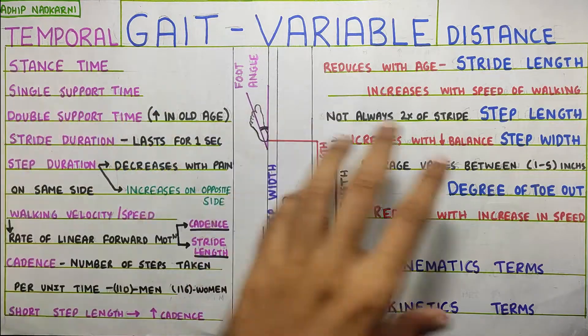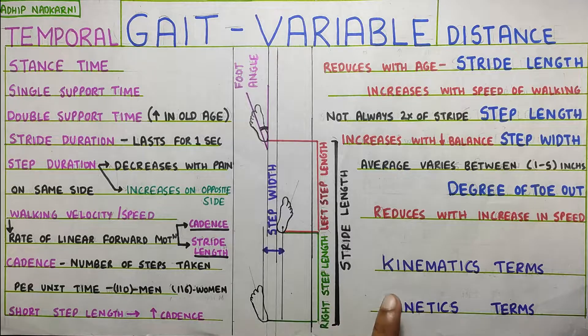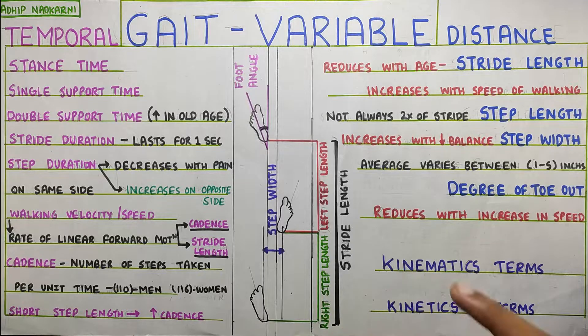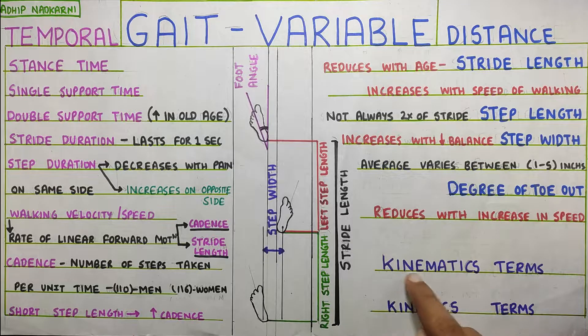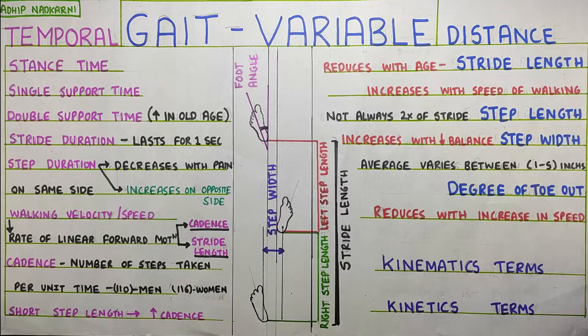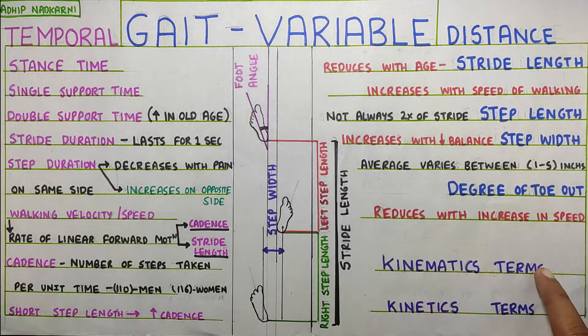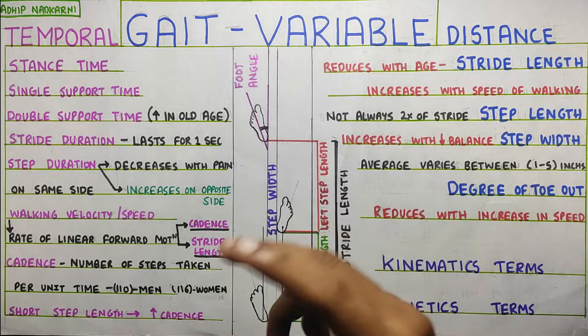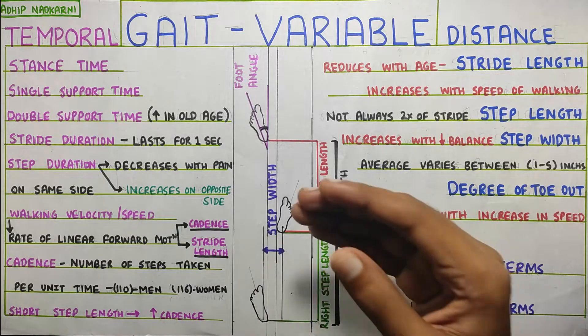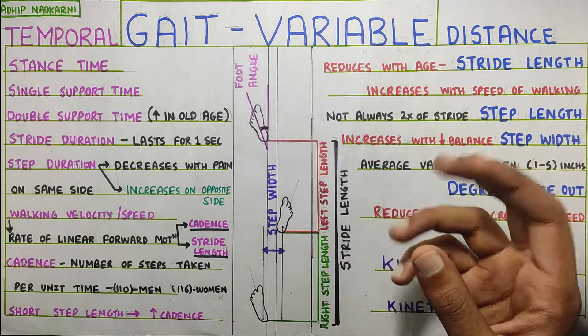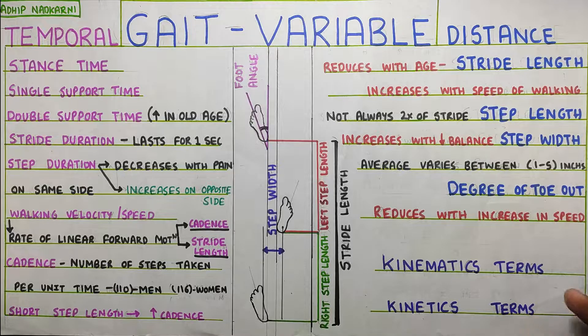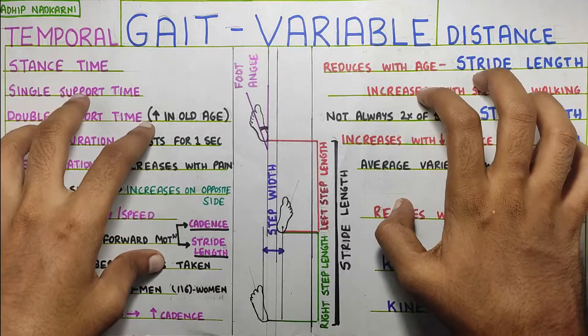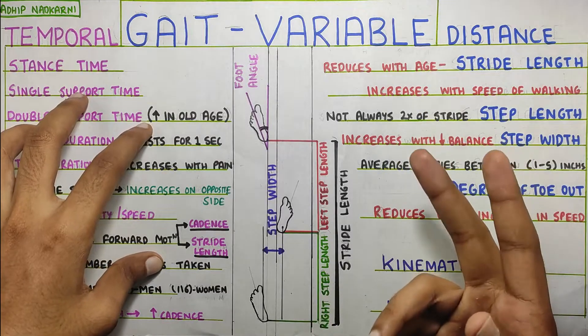Now apart from the temporal and the distance variables, we will also look at the kinematics and kinetics terms. Kinematics is the movement, right? So the joint angles and the foot trajectory that we'll be talking about, the movement, just the pure movement in gait will be coming under this. And kinetics will be where all the forces will be coming. So all the muscle activity with the help of EMG, during which phase of the gait, which muscles are activating, all those things will be coming under the kinetics terms. So let's go back to our temporal and distance. We'll focus on this for this video and then these two we will cover in the next video.